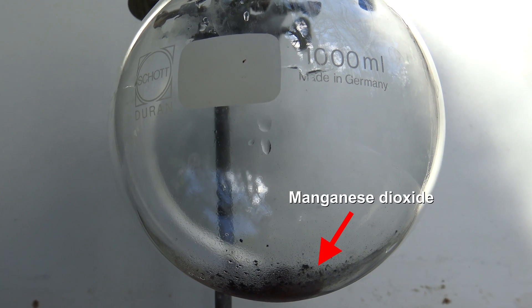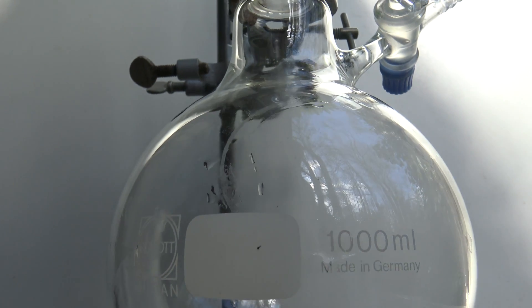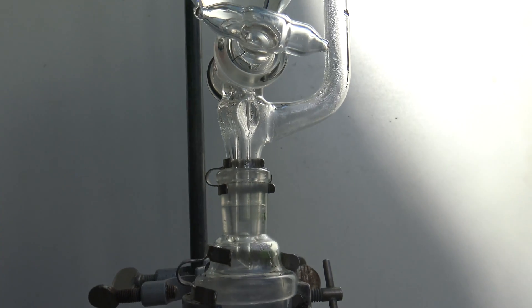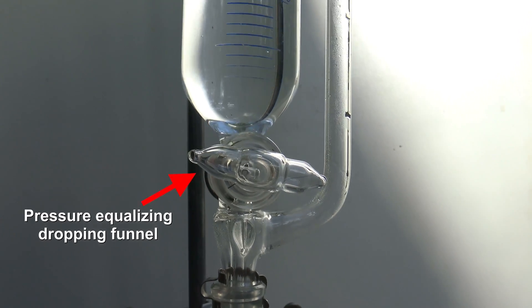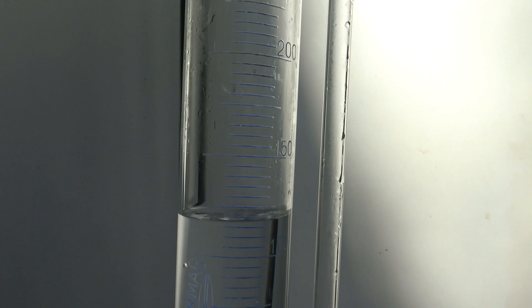For the preparation of oxygen, some manganese dioxide was added to a round bottom flask. A pressure-equalizing dripping funnel was placed on top, which was filled with 30% hydrogen peroxide, but 3 to 10% would have been better.